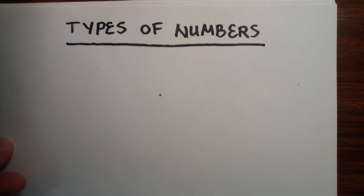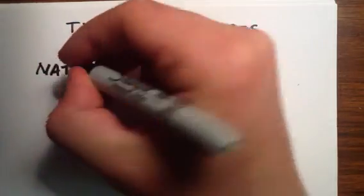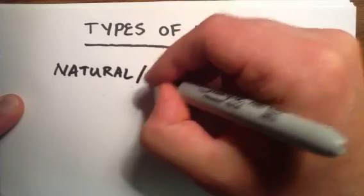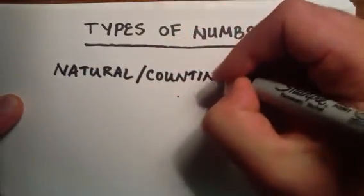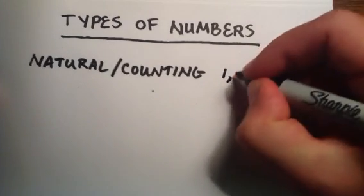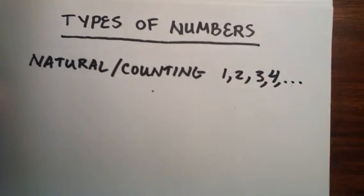Now, the first type of number is the natural or the counting number. Like the name suggests, these are numbers that you count with: one, two, three, four, and so on.